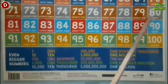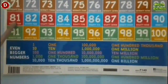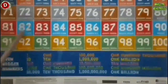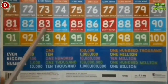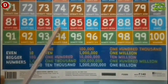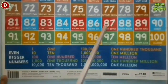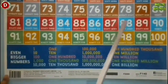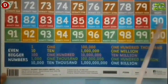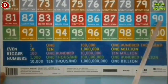Children, after 80 comes 81. Look here children, this is the next number 81. Then comes 82, 83, 84, 85, 86, 87, 88, 89 and here comes 90. So, after 89 comes 90.